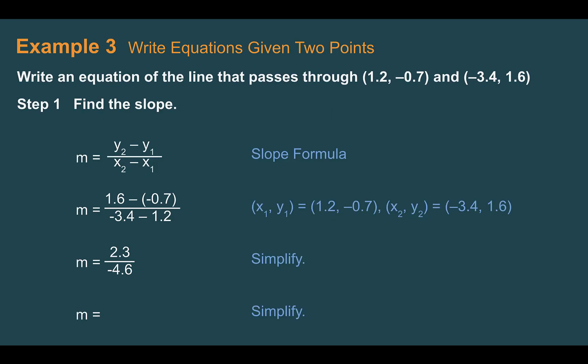So Example 3: write equations given two points. Write an equation of the line that passes through (1.2, negative 0.7) and (negative 3.4, 1.6). So first, we're not given the slope, so we need to figure it out. Let's use the slope formula, which remember is m equals y2 minus y1 divided by x2 minus x1. So plugging in our values for y, I have 1.6 minus negative 0.7. And for my x values, I have negative 3.4 minus 1.2. When I do that, I get 2.3 for my y values and negative 4.6 for my x values. Now using a calculator, I'm just going to divide that out and I get negative 0.5. So my slope is going to be negative 0.5.